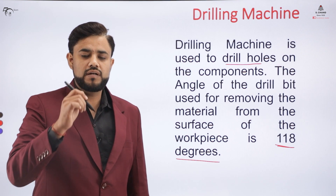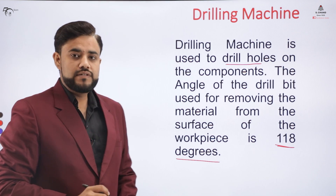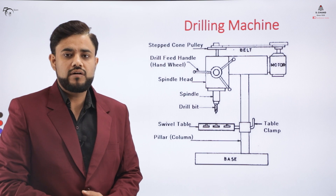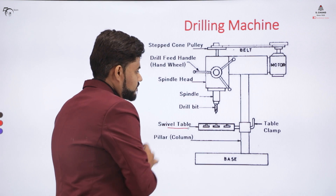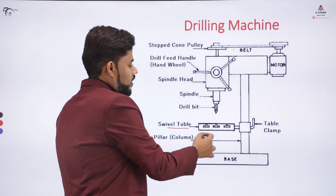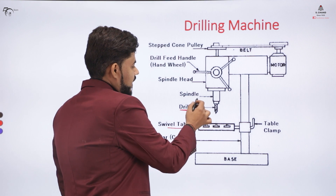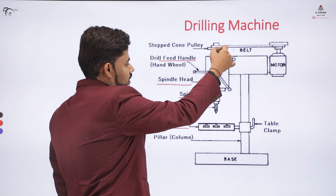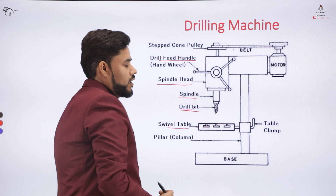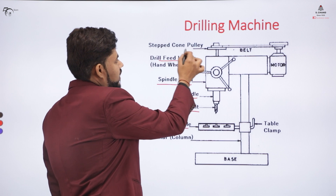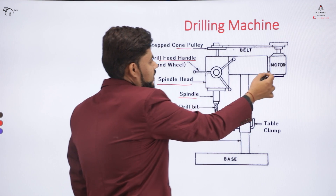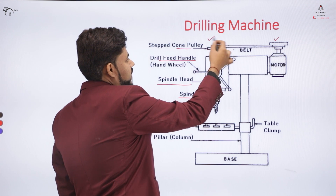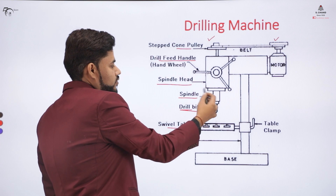The drill bit used to drill the hole on the surface has an angle of 118 degrees. Looking at the constructional details, the diagram on screen shows the drilling machine has a table and a table clamp. A drill bit is attached to the spindle, which is in turn attached to the spindle head. There is a feed handle used to move the spindle head upward or downward. It has a stepped pulley connected to the motor, which transfers power via a belt to a second pulley connected to the spindle head, which rotates the drilling bit.